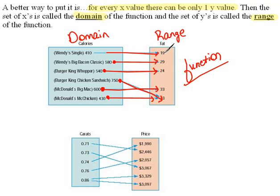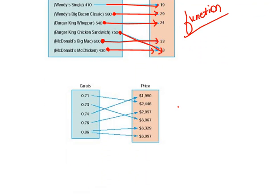The range we would list as 19, 29, 24, 33, and 23. Alright, so if this one was a function, we can expect then that the other one is not a function, especially since I told you already that one was but one's not.